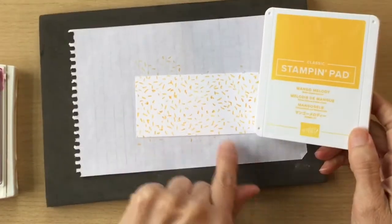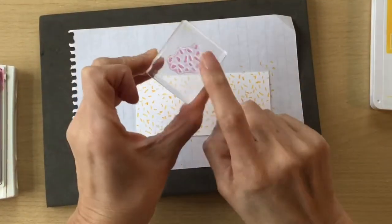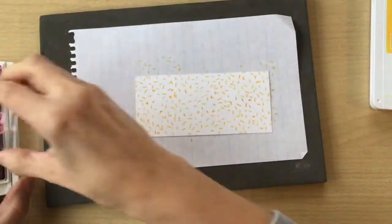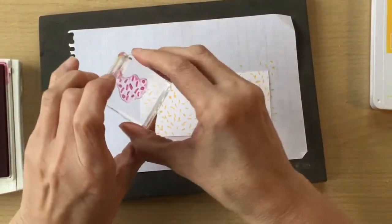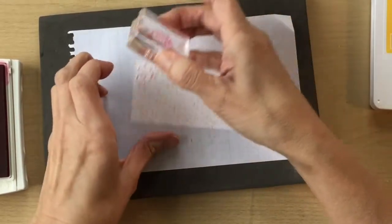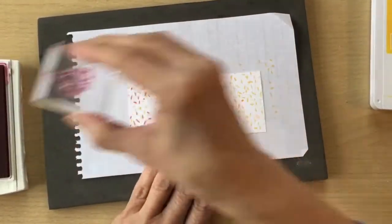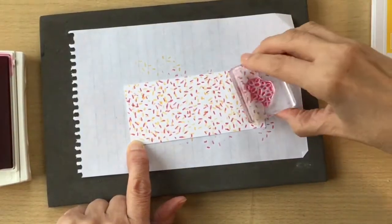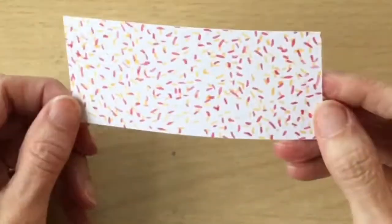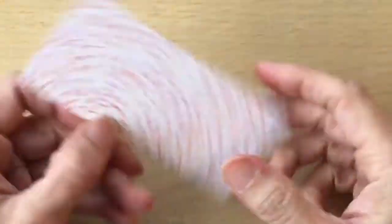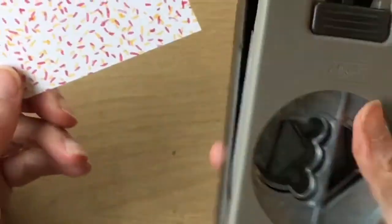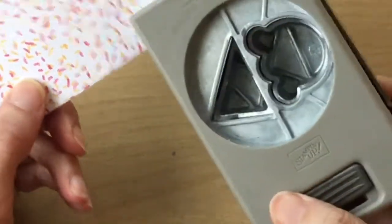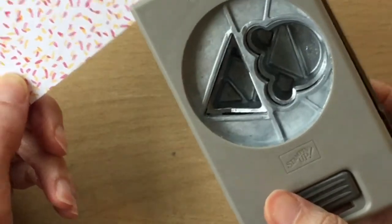I've finished the Mango Melody, clean your stamp, and then we're going to go over with our Melon Mambo. If you can see how pretty that is, and then all we're going to do is punch some of these cone shapes.